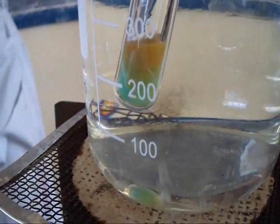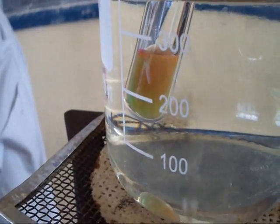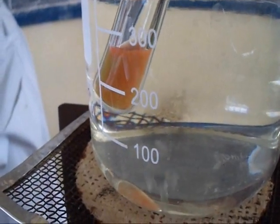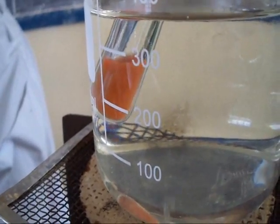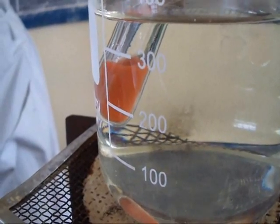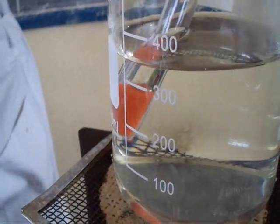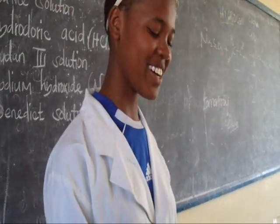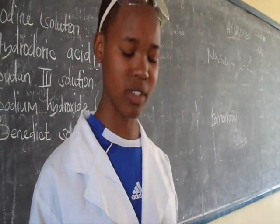As you can see, the colour has changed from blue to yellow. Then the red colour has started to appear. Finally, our solution has become brick red or orange in colour. We now have food sample H which does not contain reducing sugar. As you have seen, food sample Y contains reducing sugar.